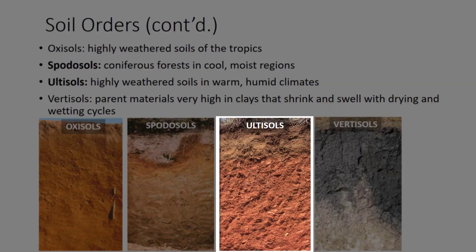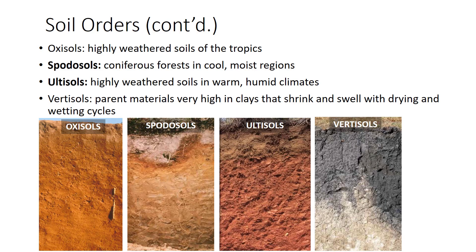Ultisols are highly weathered soils of warm, humid climates but not as weathered as Oxisols. They can be quite acidic, inhibiting plant growth. The subsoil is often reddish in color. Ultisols are not naturally fertile soils but are used for agriculture with proper fertilization and liming. About 13% of U.S. soils are Ultisols, found mostly in the southeast.